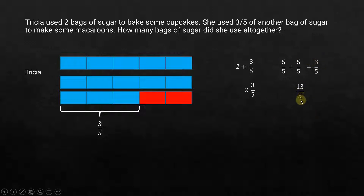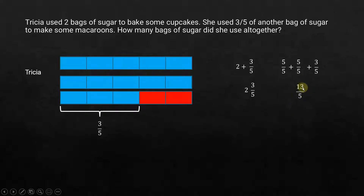This is also a valid answer. This is not a proper fraction — we call this an improper fraction because the numerator is greater than the denominator. In a normal proper fraction, the numerator is always smaller than the denominator, like 3 over 5.